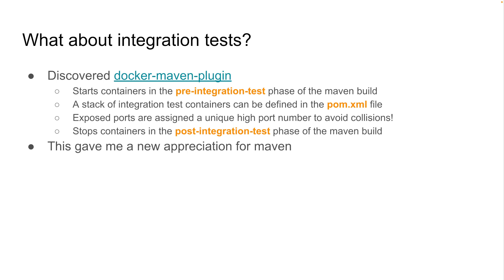What this plugin does is, in the pre-integration test phase of the Maven build, it starts one or more Docker containers. You configure those Docker containers within the plugin configuration inside your pom.xml file. Any exposed ports you make in those containers will be assigned a random or incrementing high port number, which helps you avoid container port collisions. When all the tests are done, all of the containers are stopped and removed during the post-integration test phase. This setup gave me a whole new appreciation for what Maven can do.